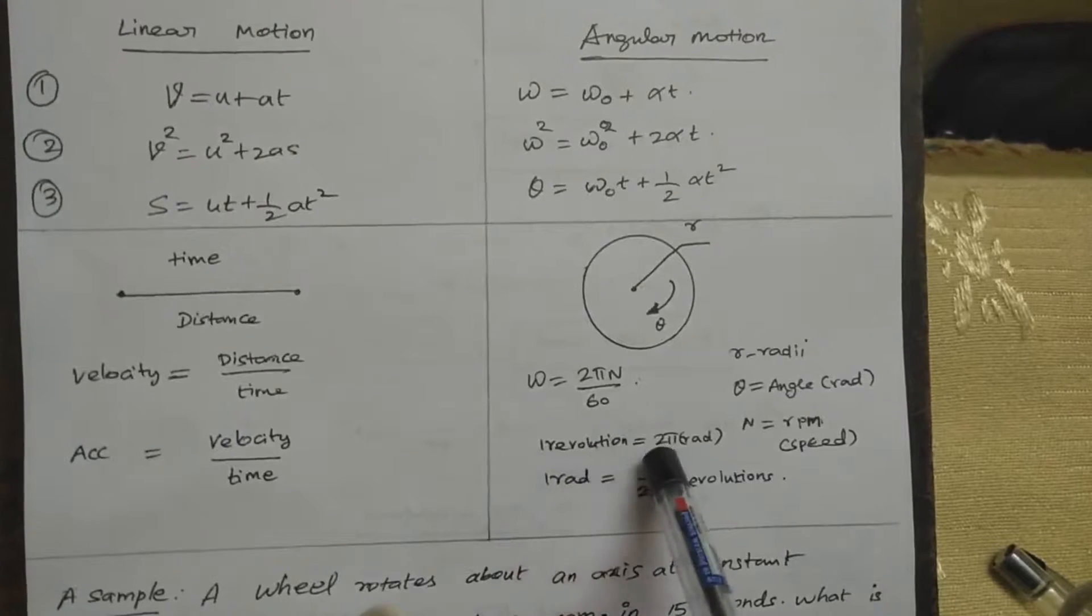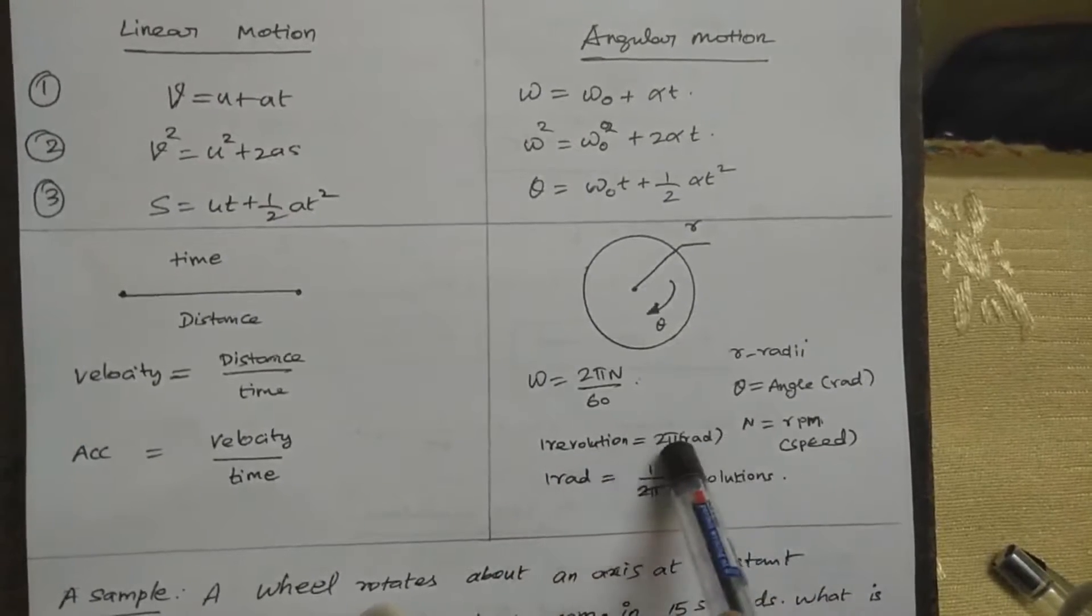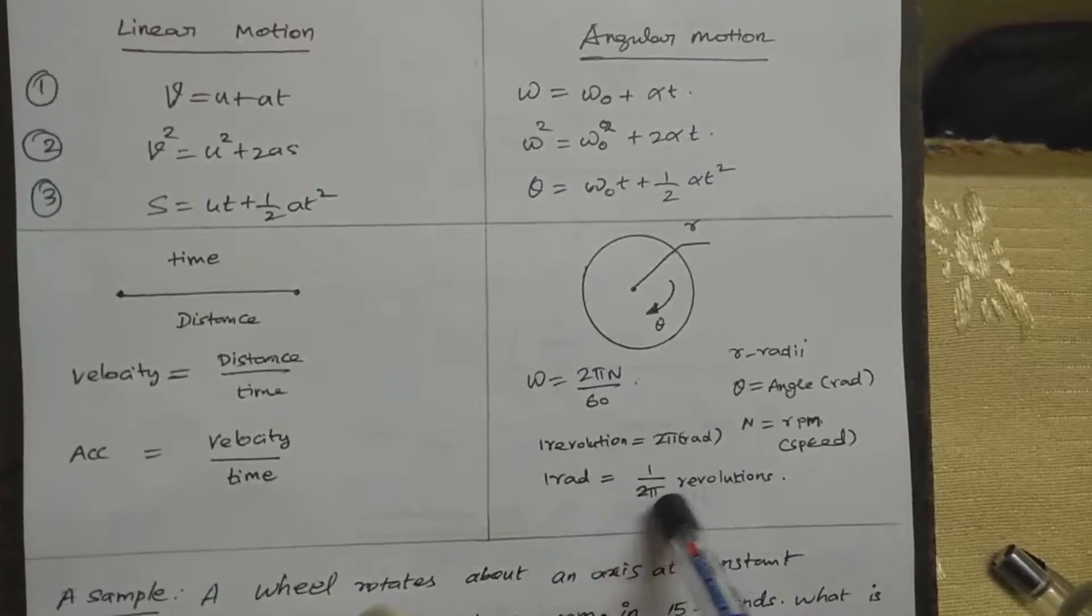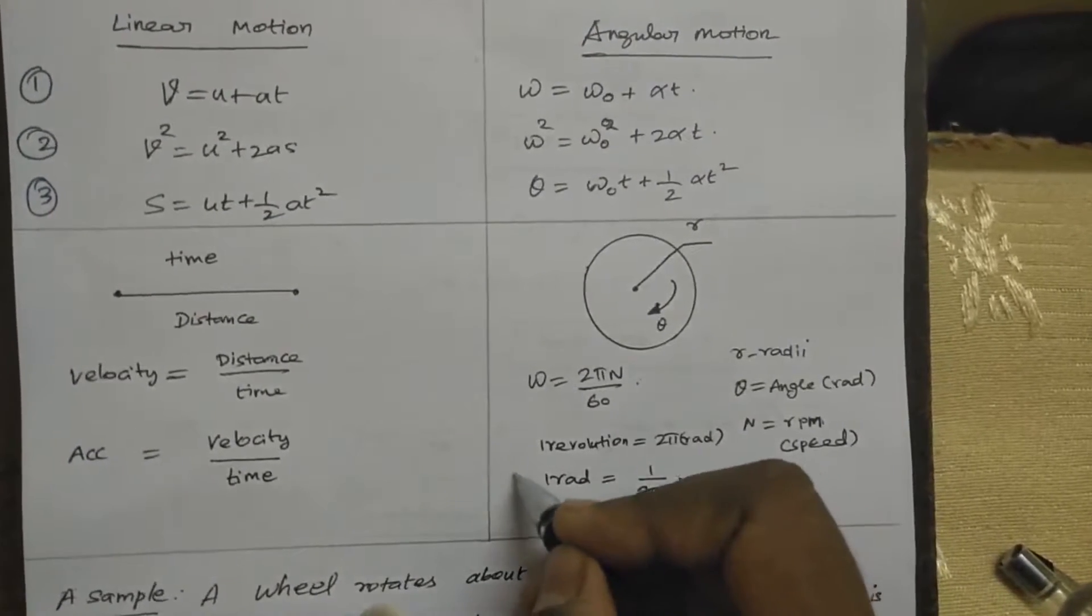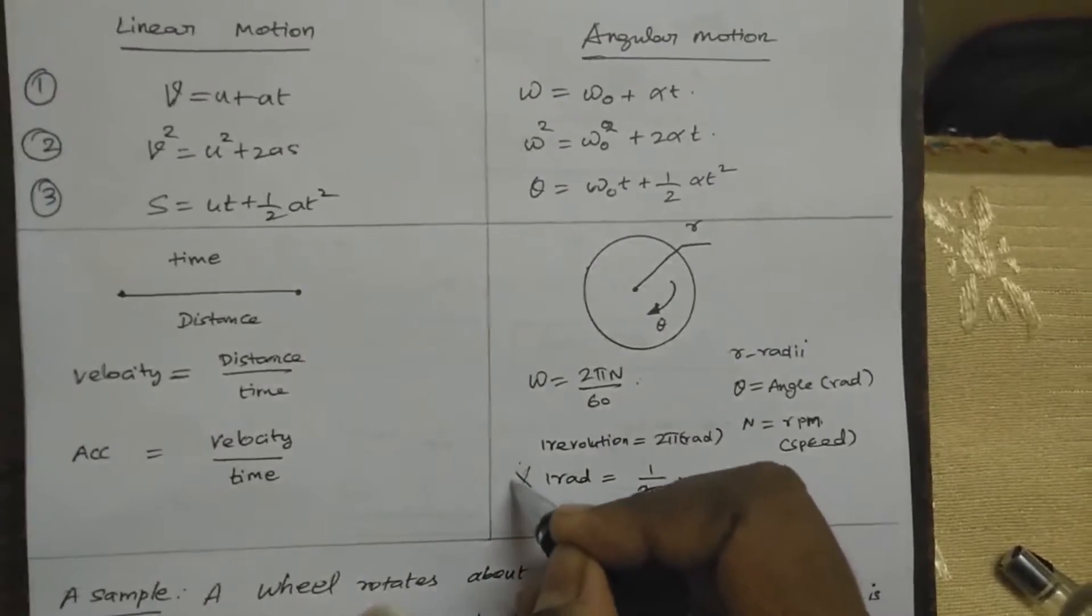One revolution equal to 2π radians. One radian equals one by 2π revolutions. That is one radian.